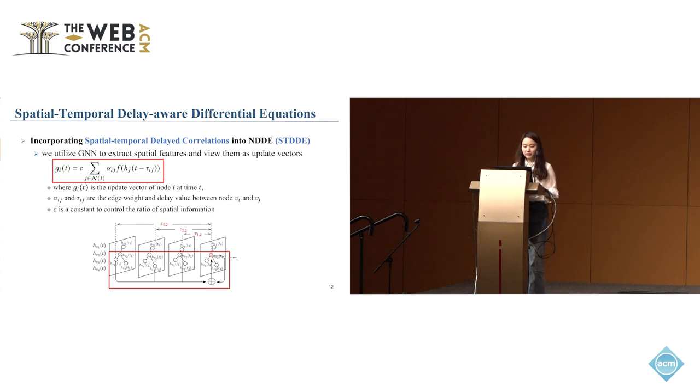Next, we incorporate the spatial-temporal delayed correlations into our proposed NDDE. We utilize a GNN to extract spatial features and view them as update vectors, where g_i_t is the update vector of node i at time t, alpha_ij is the edge weight, tau_ij is the delay value between node v_i and node v_j, and c is a constant to control the ratio of spatial information. Based on this equation, we can incorporate spatial-temporal delay correlations into our framework.